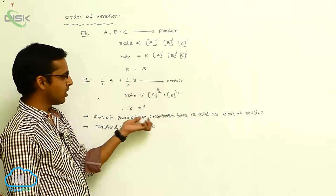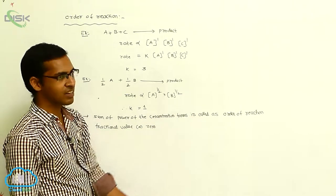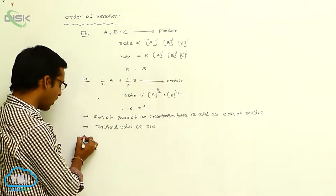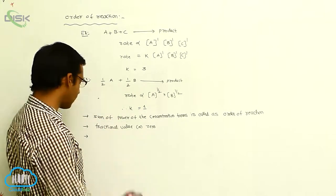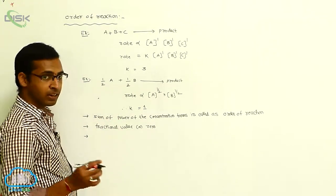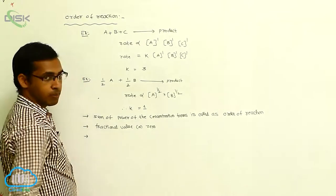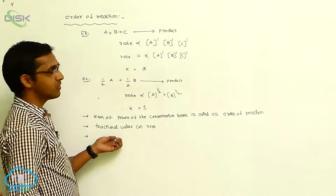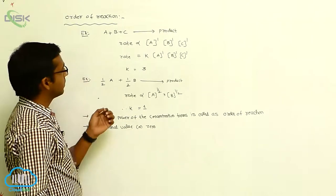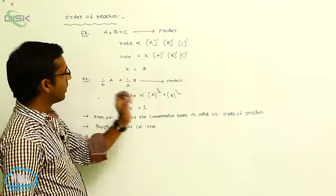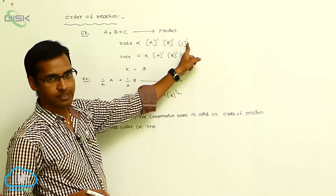This order of reaction — the determination of order of reaction is done experimentally and is relatively easy, but theoretically it is different. The order of reaction only depends on the concentration of the reactant terms.